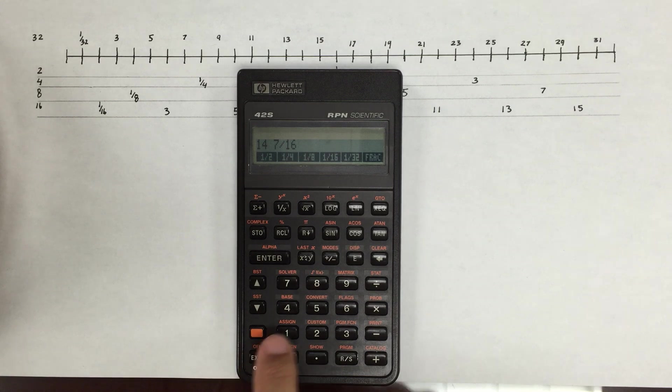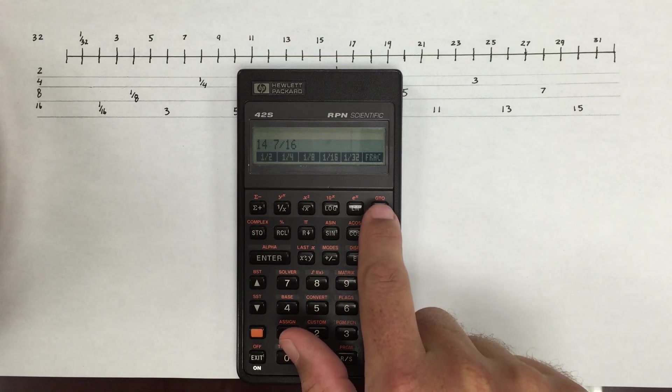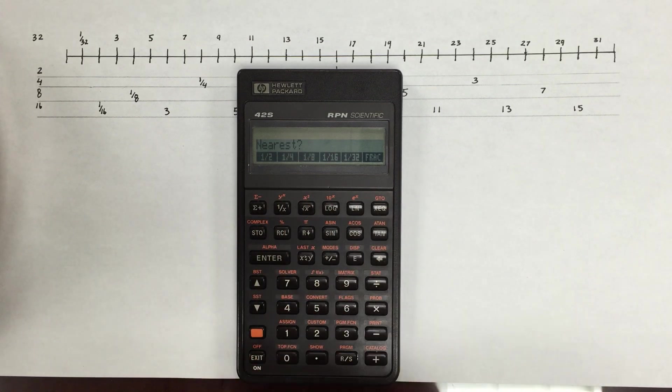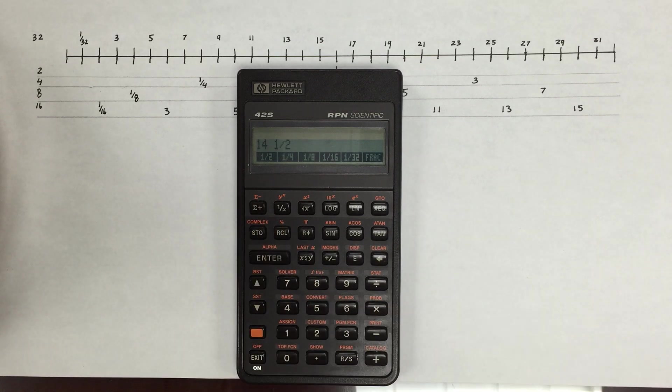Now one thing to note is that if I had just gone, say, 14 and 7 sixteenths, and I wanted the nearest half,